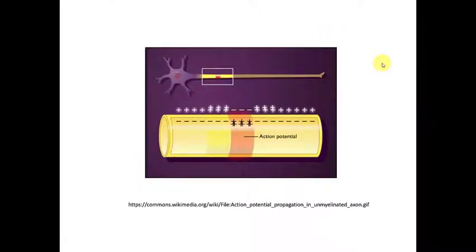Here is a gray matter unmyelinated axon. So, you notice that the action potential moves from one section of the axon to another. We say it propagates down the axon. So, one section of the axon depolarizes and it causes the next section to depolarize. The action potential then moves down the axon in this way.